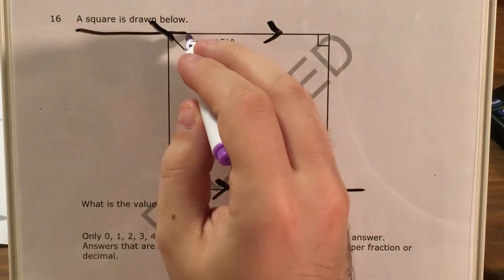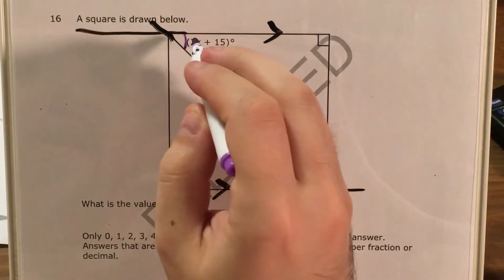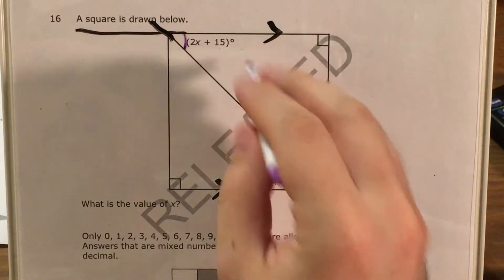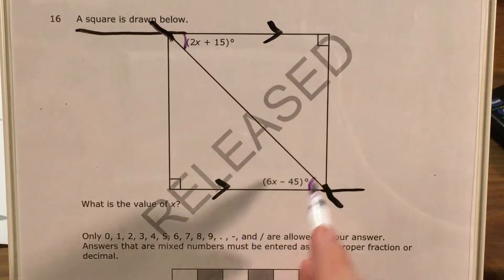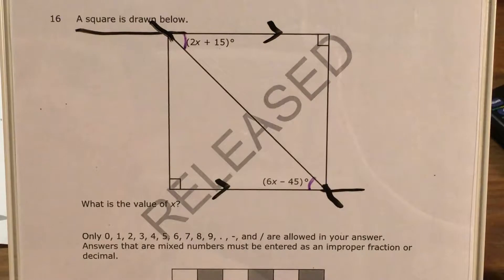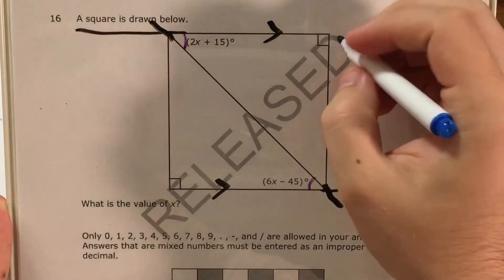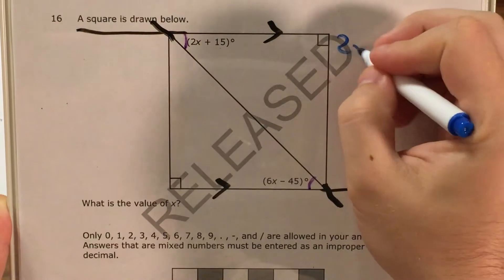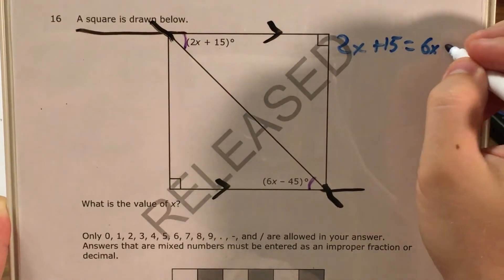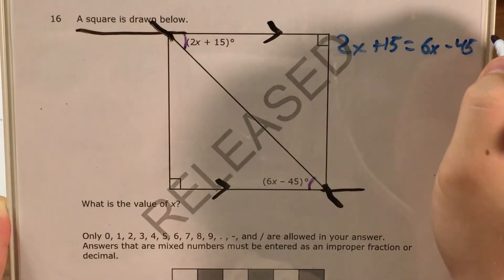Every time we see parallel lines and a transversal it creates small angles which are all congruent to each other and big angles which are all congruent to each other. We have two small angles so these two angles are actually going to be congruent to each other which means that if I'm going to take this geometry stuff and turn it into algebra language I can actually set up the equation of 2x plus 15 equals 6x minus 45.